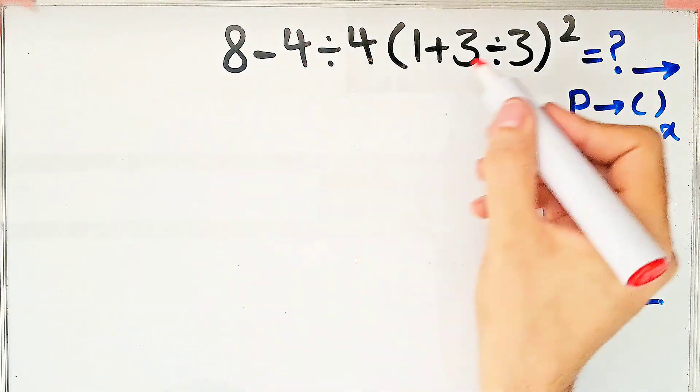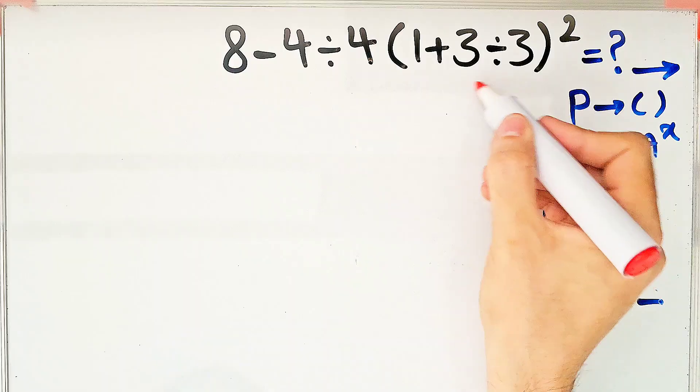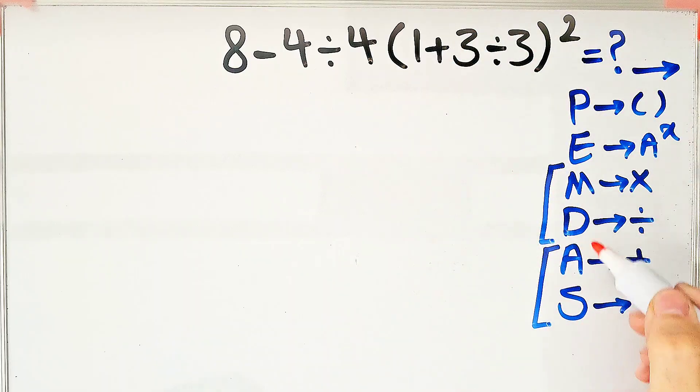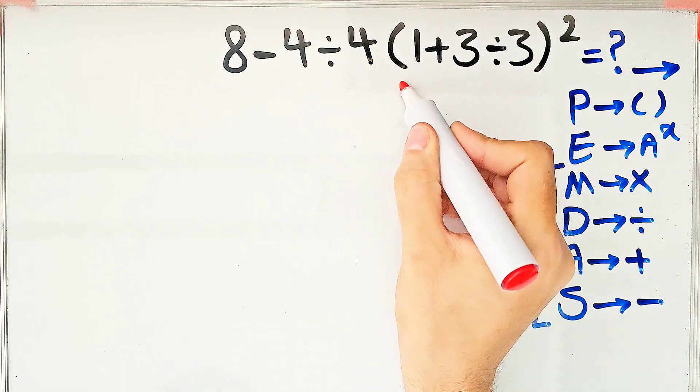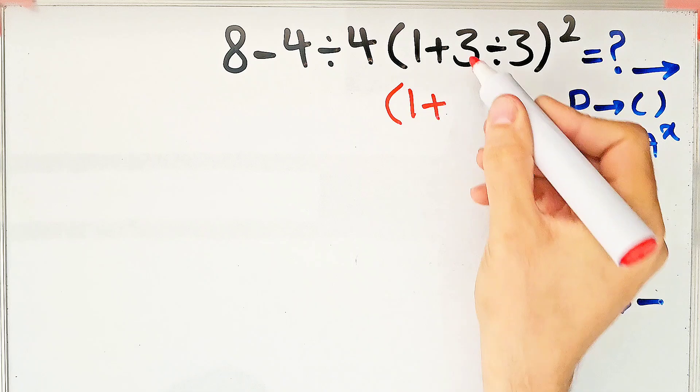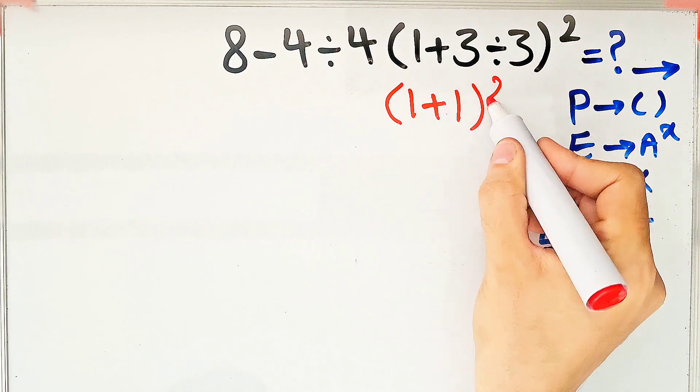First, we simplify the parentheses. Inside the parentheses we have addition and division. Division has higher priority than addition, so first we do this division. We have 1 plus 3 divided by 3, that equals 1.